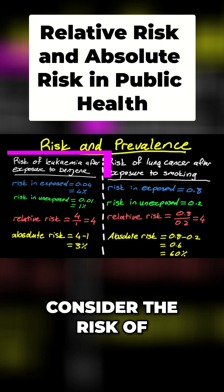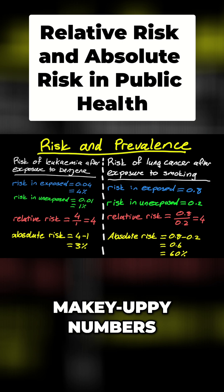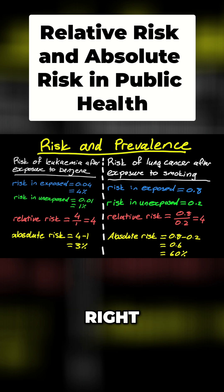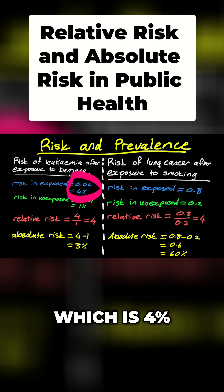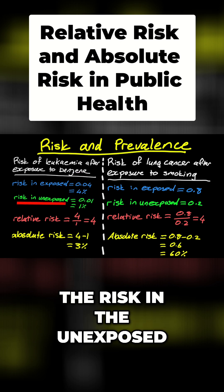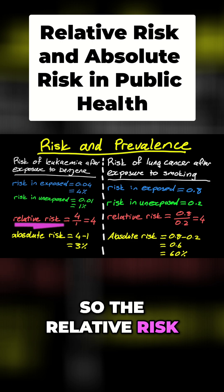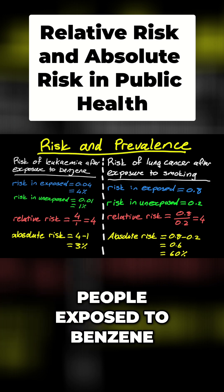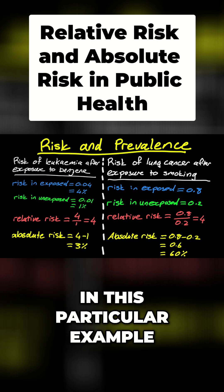Consider the risk of leukemia after exposure to benzene — these are just made-up numbers to illustrate a point, not actual science. The risk of people exposed to benzene, let's say, was 0.04, which is 4%. The risk in the unexposed was 0.01, which is 1%. So the relative risk is 4 over 1, which is 4 — people exposed to benzene are four times as likely to get leukemia in this example.